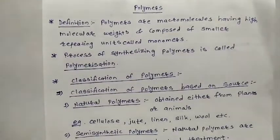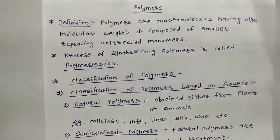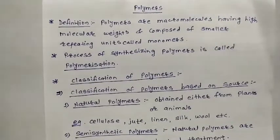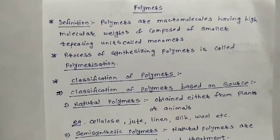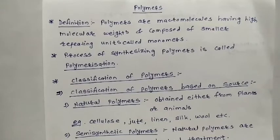Hello friends, good morning. Today we are going to start a new chapter of chemistry — polymers. The name itself indicates what poly means: in simple terms, poly means many and mer means unit. So polymers means many units — a large number of small units. The definition for polymer is: polymers are macromolecules having high molecular weights, composed of smaller repeating units called monomers, forming a large chain macromolecular structure.